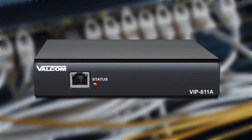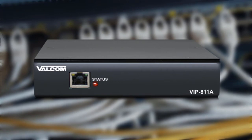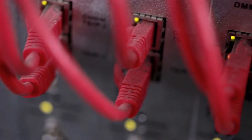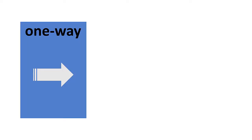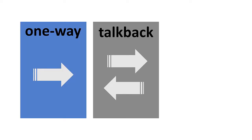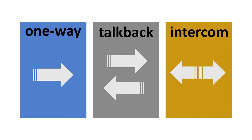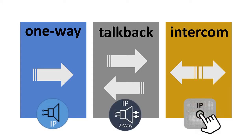Valcom's IP gateways digitize audio from a phone system and distribute it over IP speakers. The type of gateway needed varies depending on how it integrates with your telephone system. Most Valcom IP gateways are capable of one-way, talkback, and intercom through software programming. However, just like analog paging systems, different speakers are required for each mode.